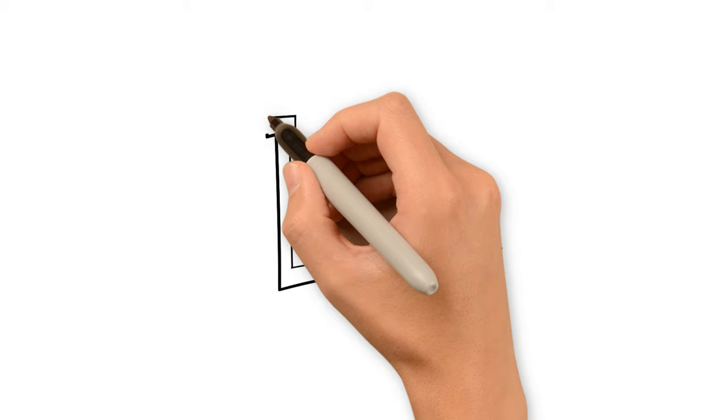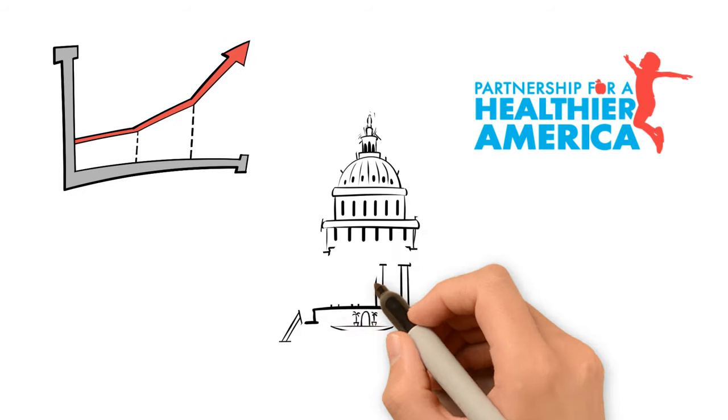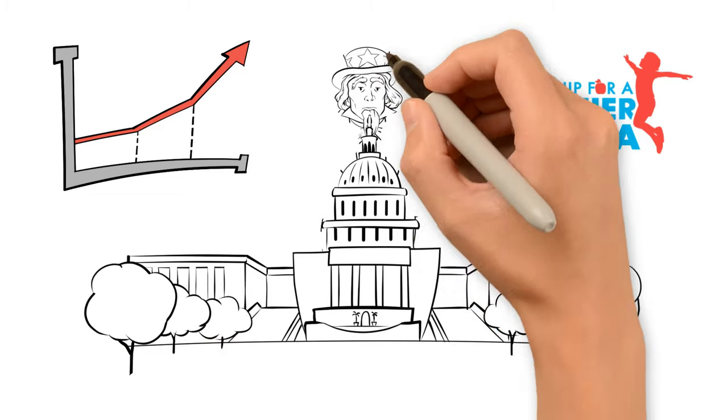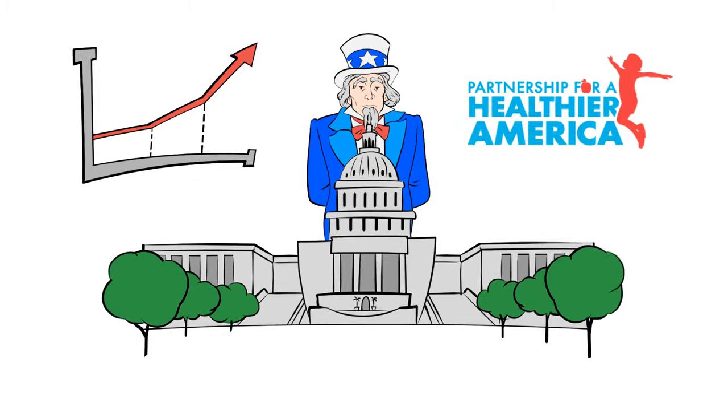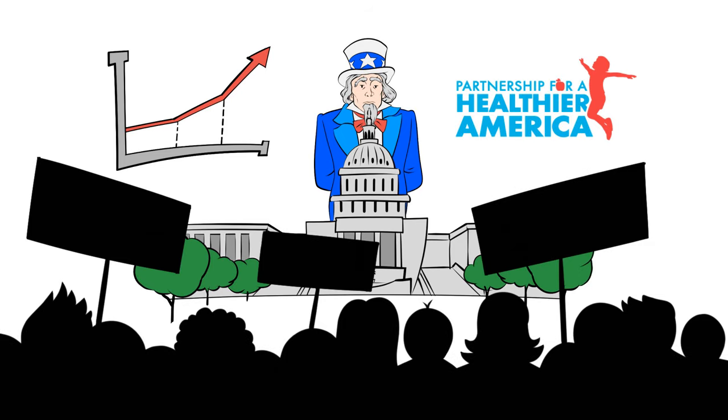Obesity rates have more than tripled since the McGovern report was published. Yet the government's dietary guidelines continue to promote McGovern's basic recommendations, despite mounting criticism from dieticians for omitting more recent studies that contradict official advice.